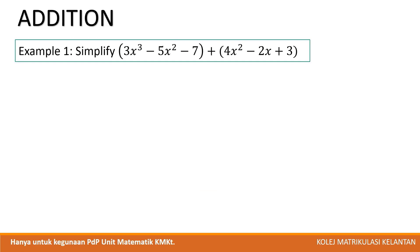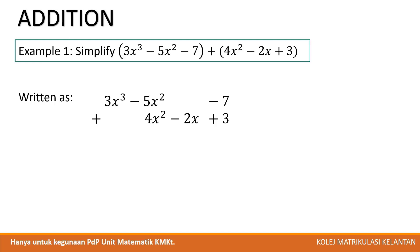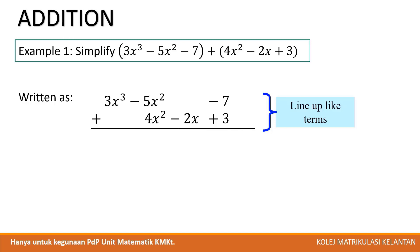Example 1. Simplify 3x³ - 4x² - 7 + 4x² - 2x + 3. We can write in two lines: the first polynomial, and then the second polynomial on the second line, lining up according to like terms. Adding 3x³ + 0 gives 3x³. Then -4x² + 4x² gives 0. Then 0 + (-2x) gives -2x. And -7 + 3 gives -4. This is the final answer.